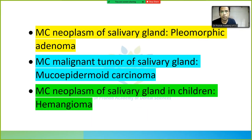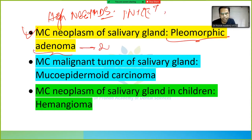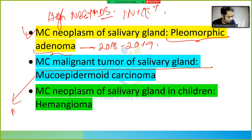High-yield question: the most common neoplasm of the salivary gland is pleomorphic adenoma — this has appeared in exams in 2018 and 2019. The most common malignant tumor of the salivary gland is mucoepidermoid carcinoma — remember 'M for malignant, M for mucoepidermoid.'